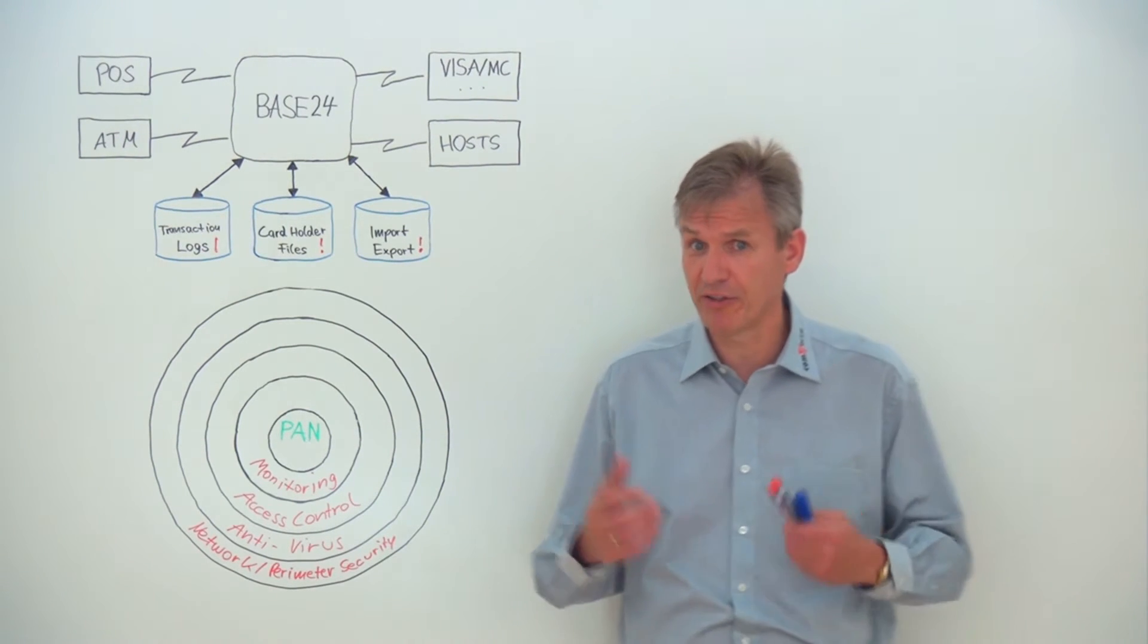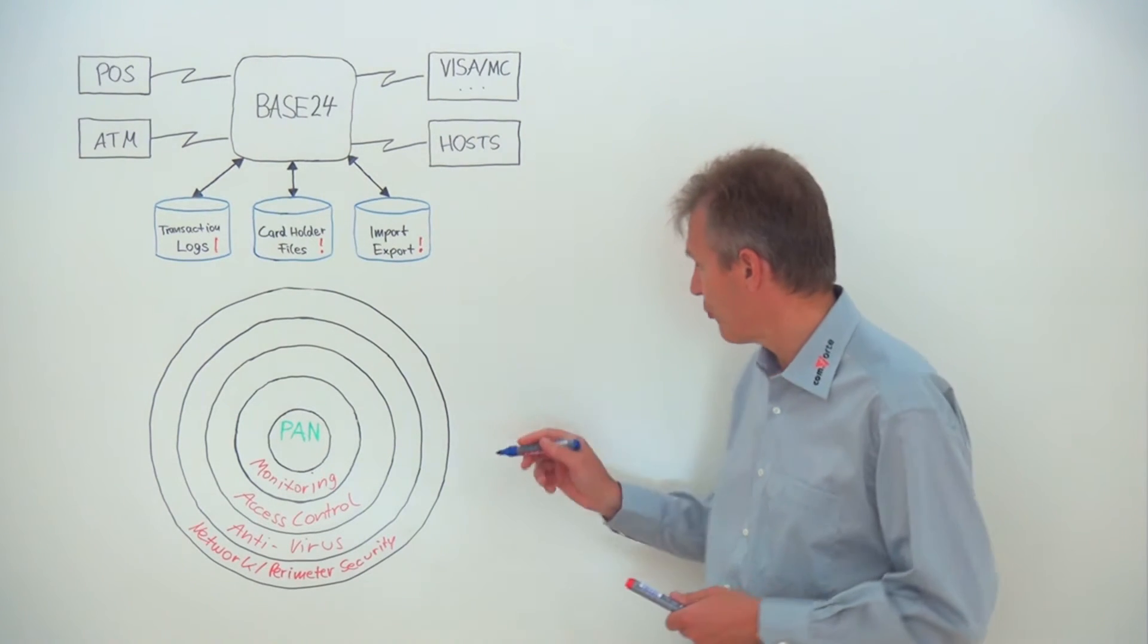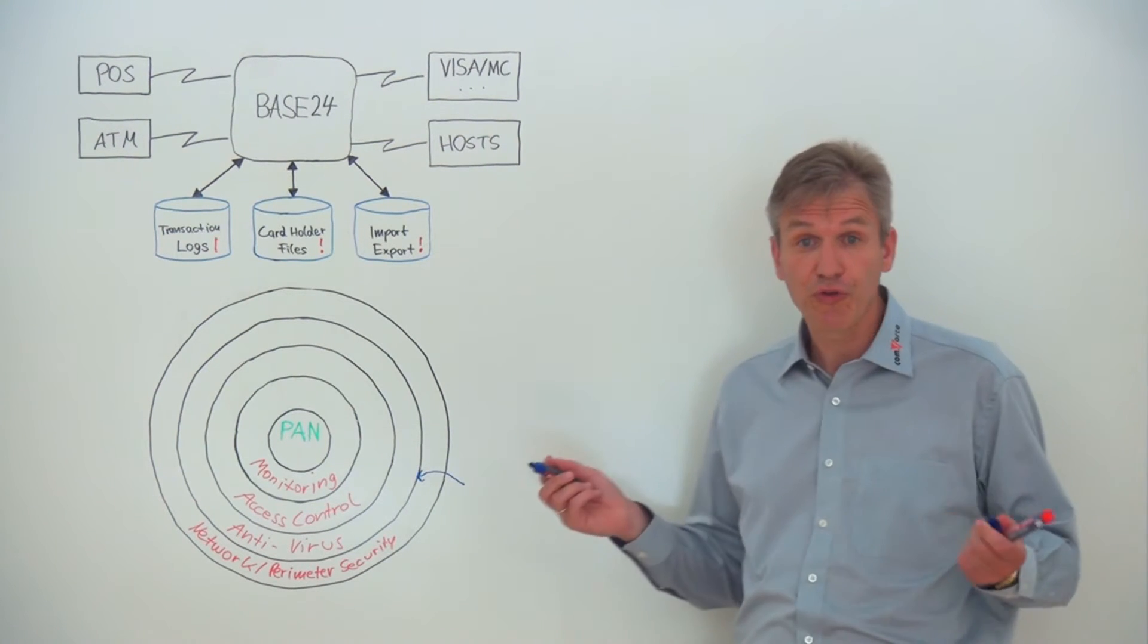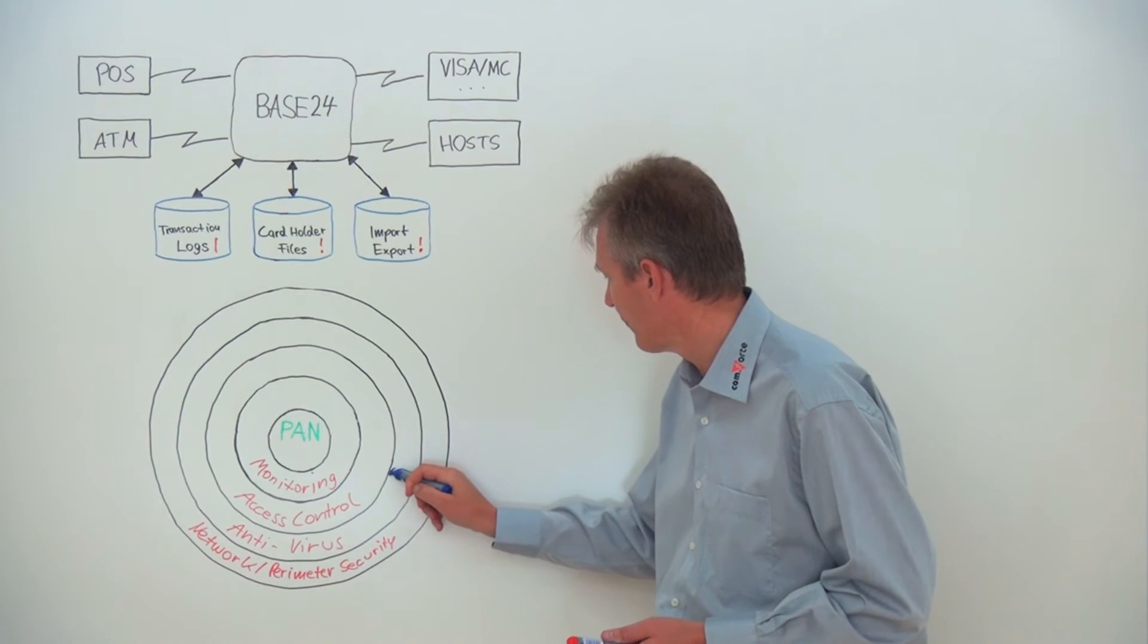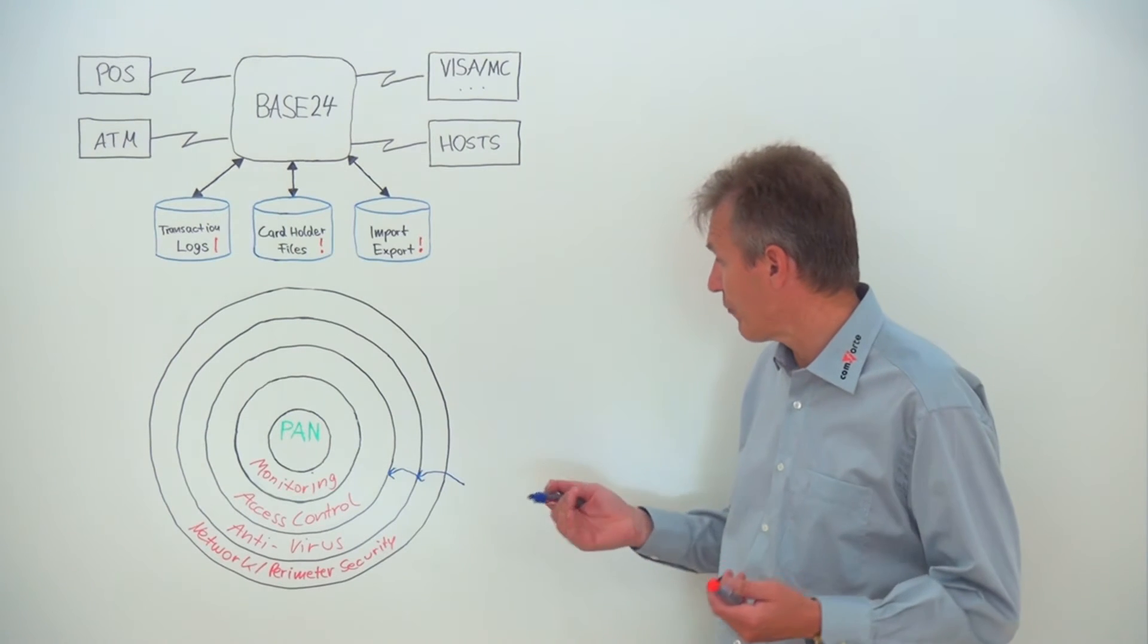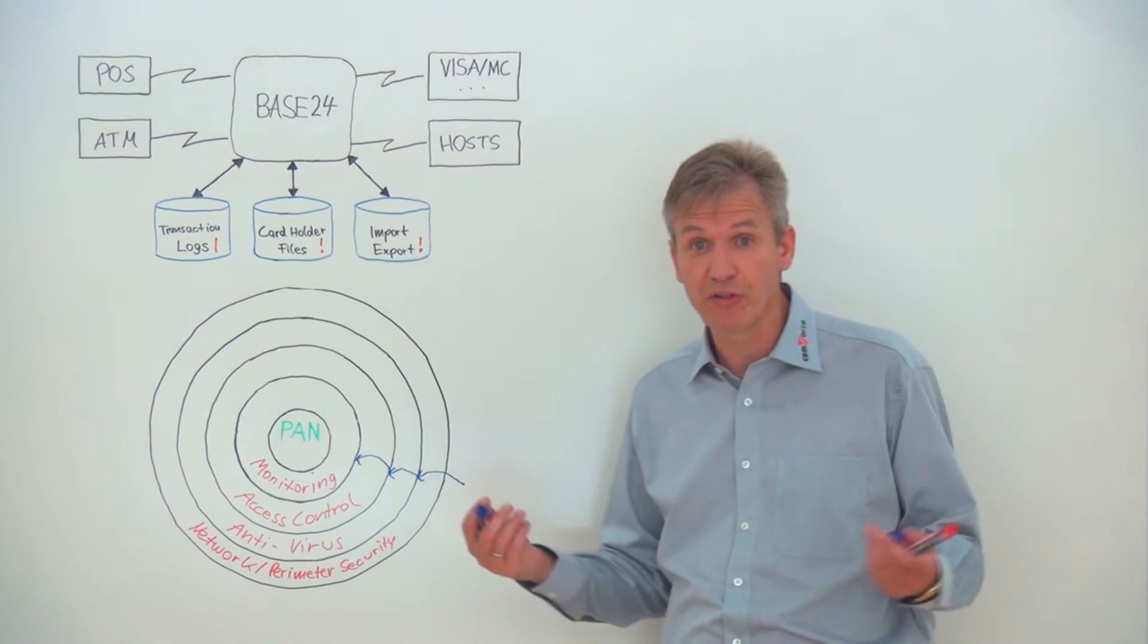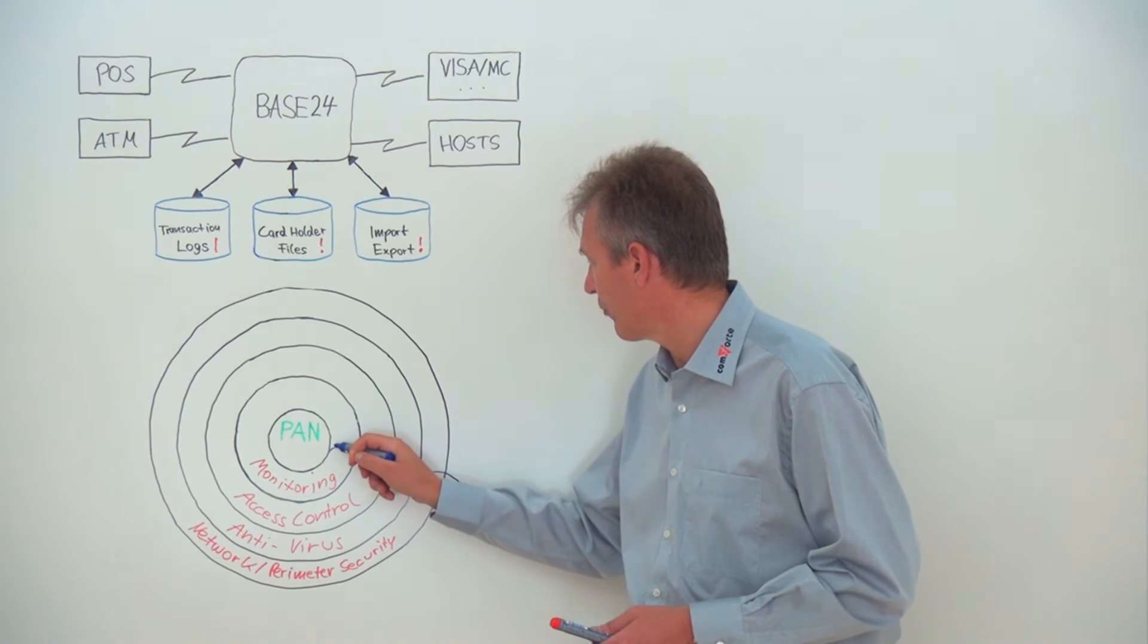To steal credit card data, the attacker would need to bypass your network and perimeter security. He would also need to overcome your antivirus protection. He would then need to gain the right level of access control to get onto your internal network systems. And he would need to avoid detection through monitoring happening at the various levels.